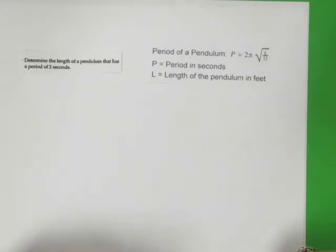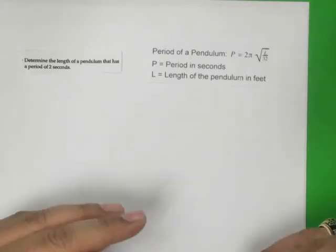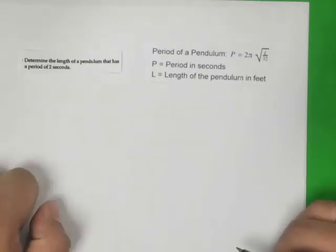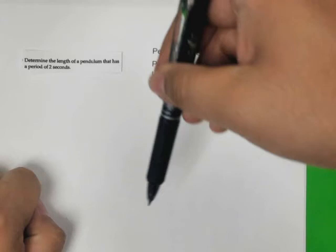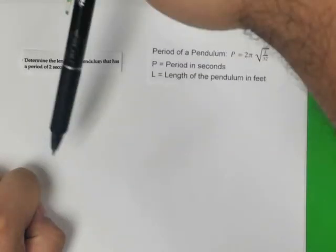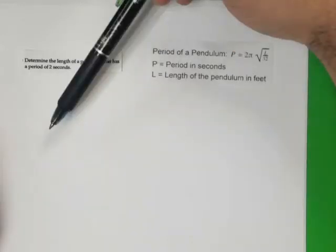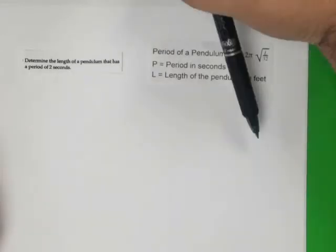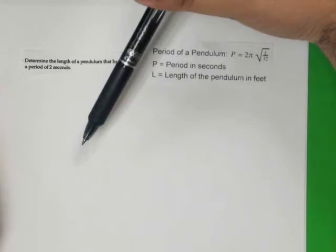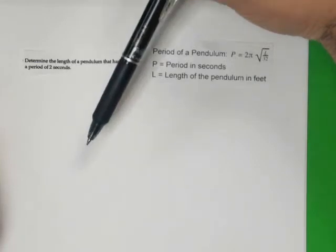We're going to talk about what a pendulum is first. If you think about a grandfather clock or anything like that in your home, the pendulum is that thing that swings back and forth. The period of a pendulum means how long does it take to complete one of those rotations, or one of those swings. That's what that period is.